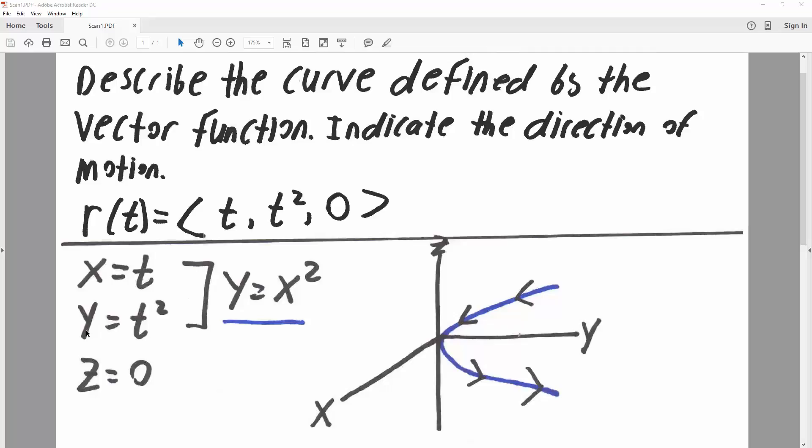Since y is equal to t squared and x is equal to t, we can say that y is equal to x squared.